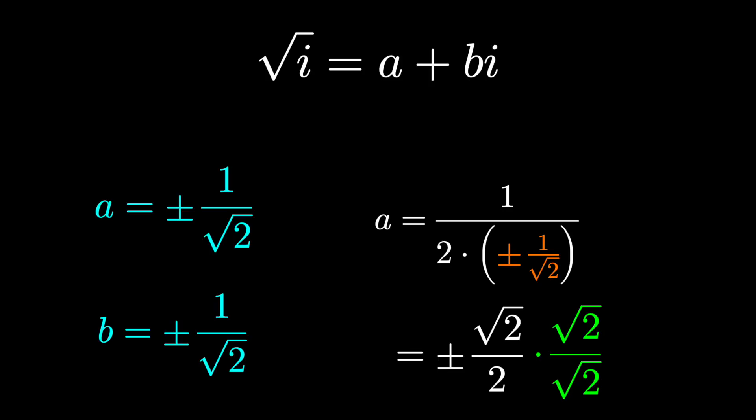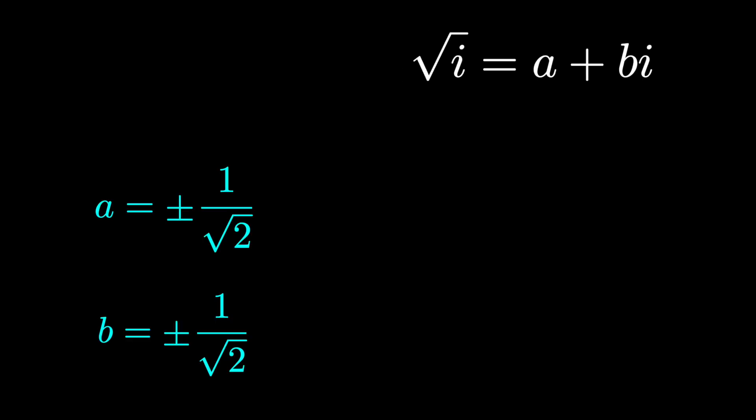And remember, we originally said the square root of i was a plus bi. And so square root of i actually has two solutions. It's either 1 over root 2 plus 1 over root 2i, or minus 1 over root 2 minus 1 over root 2i.